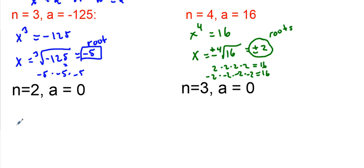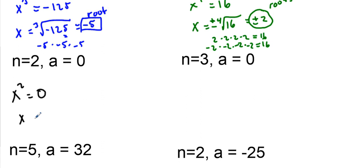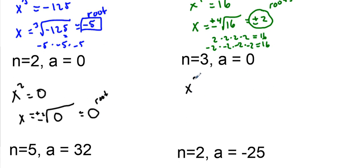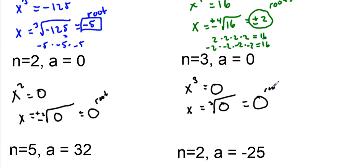What happens when you have x squared equals 0? This is sometimes where students get confused. We take the square root of 0 — plus or minus — but what times itself gives us 0? Zero times itself gives us 0, so the square root of 0 is 0. Similarly, the cube root of 0 is also 0. In fact, any root of 0 is 0 — that's a property you want to know and write down: the nth root of 0 always equals 0.